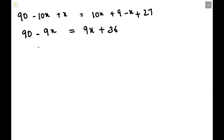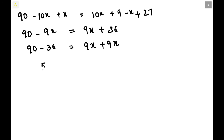We have 90 minus 9x equals 9x plus 36. Transposing: we keep 90 on the LHS and bring 36 to the LHS, where it becomes minus 36. The minus 9x moves to the RHS and becomes plus 9x. So 90 minus 36 equals 9x plus 9x. That gives us 54 equals 18x. We can now find the value of x.